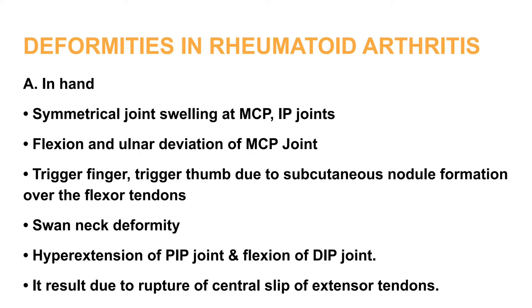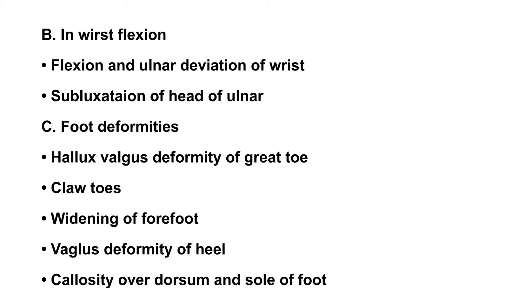Deformities in rheumatoid arthritis include symmetrical joint swelling at MCP and IP joints, flexion and ulnar deviation of MCP joints, trigger finger, and thumb deformity due to subcutaneous nodule formation over the extensor tendon. Swan neck deformity involves hyperextension of the PIP joint and flexion of the DIP joint, resulting from rupture of the central slip of the extensor tendon.